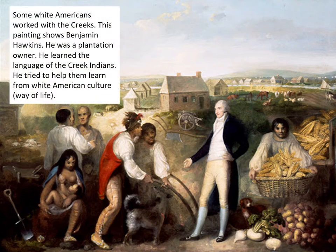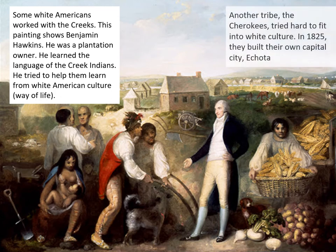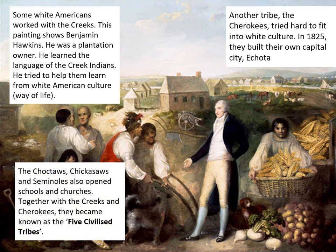To an extent that plan does work in some places. Benjamin Hawkins, a plantation owner, moved into the Creek region, learned the language of the Creek Indians, and tried to help them learn white American culture. Some Creeks adopted this, and you can see some living in what we'd refer to as white settler houses. The Cherokees also tried to fit into white culture, and in 1825 they even built their own capital city on a very similar plan to Washington. The Choctaws, Chickasaws, and Seminoles also opened schools and churches, and together those five tribes became known as the five civilized tribes.